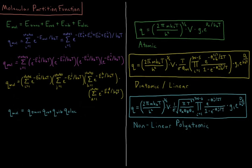So whether it is atomic, diatomic, linear, or nonlinear, we can take the specific parts of each contribution to the partition function and multiply those together to get the total partition function for the given type of atom or molecule.